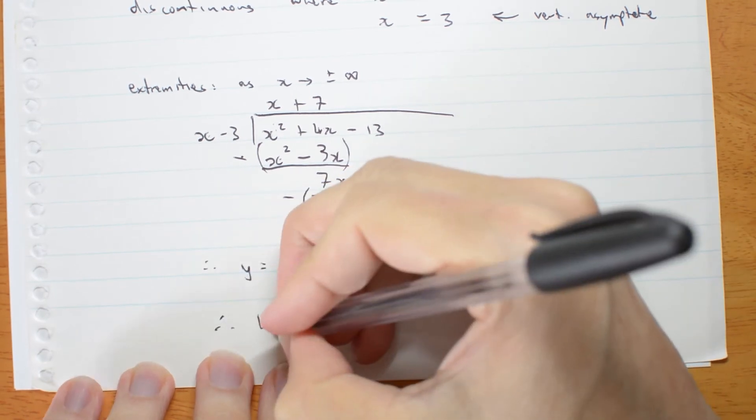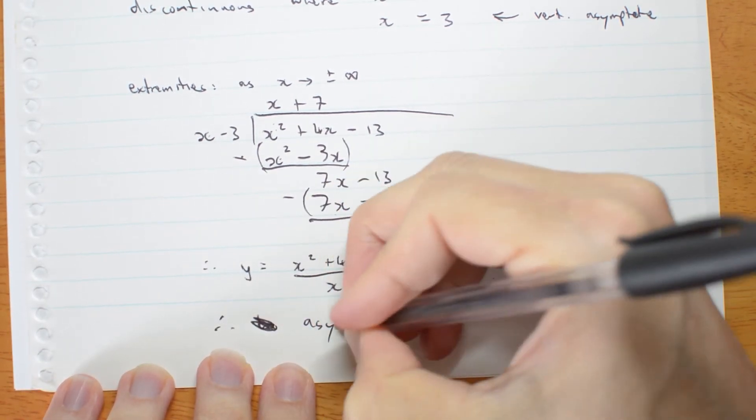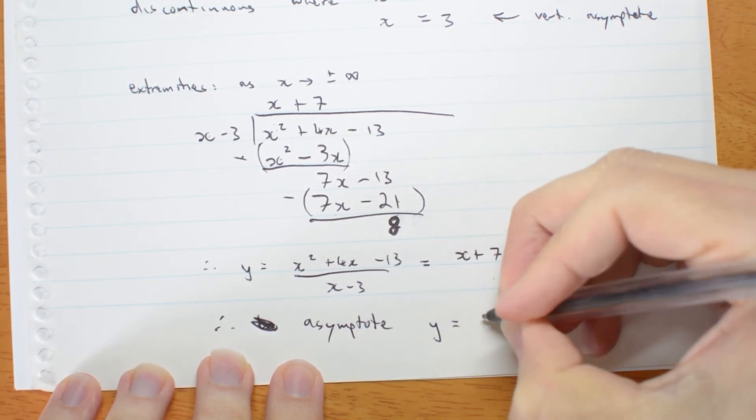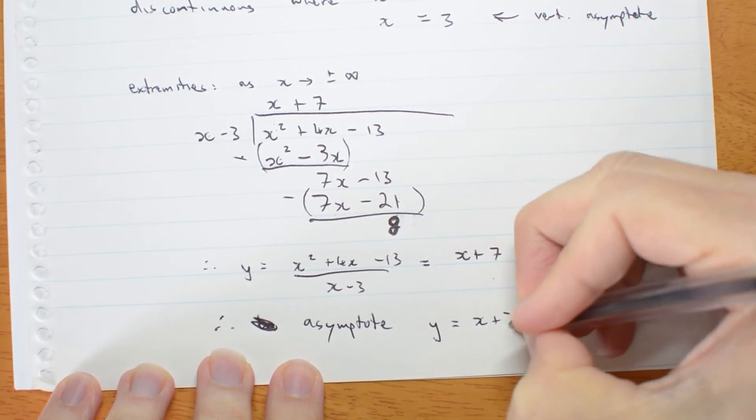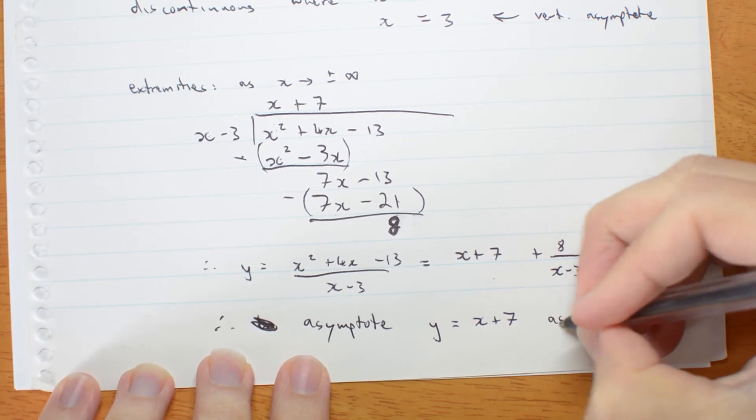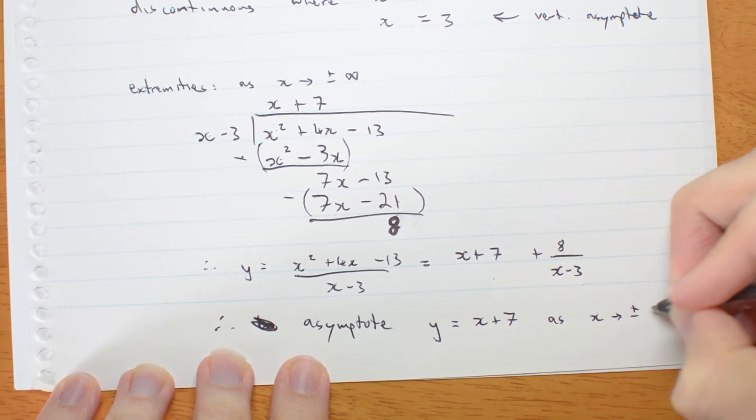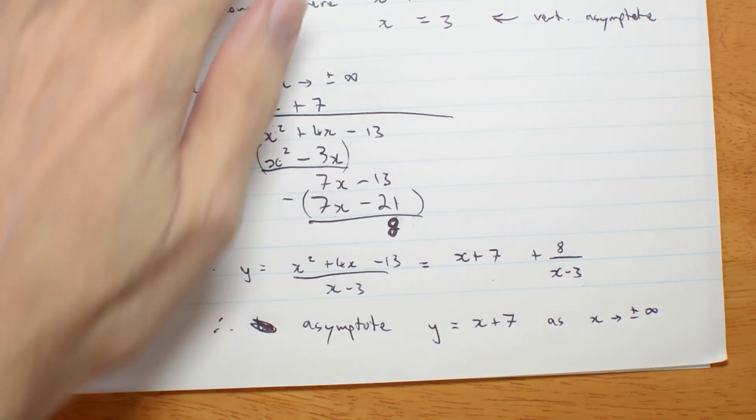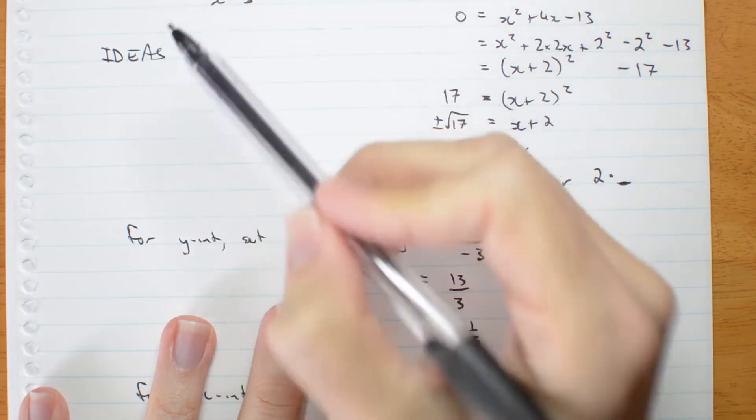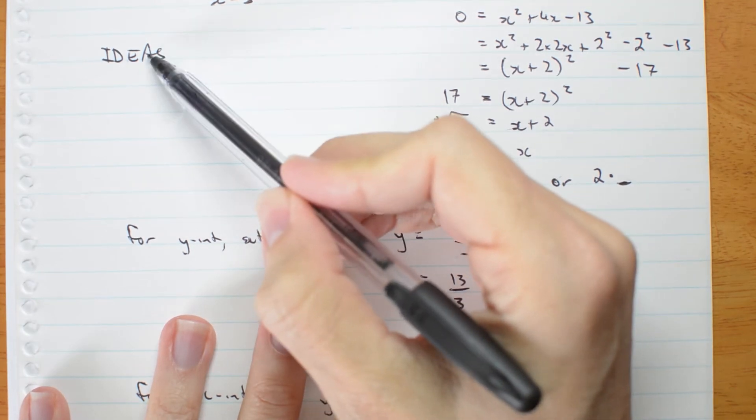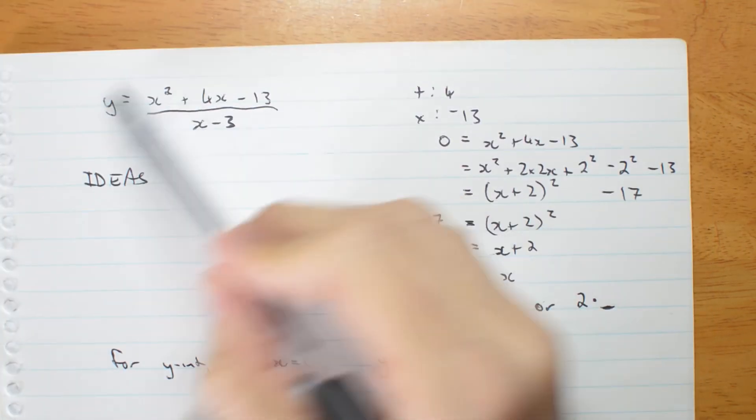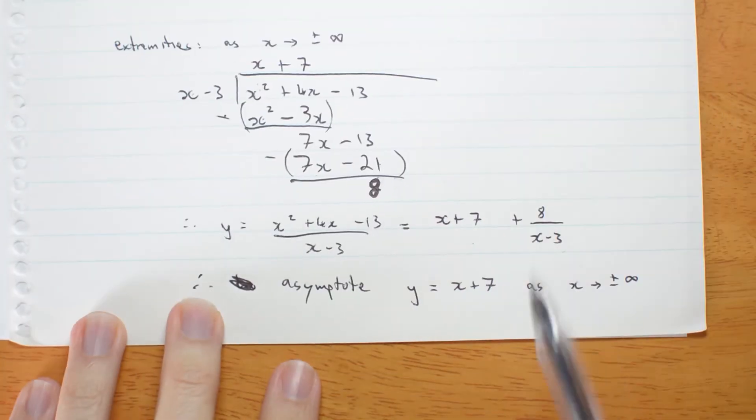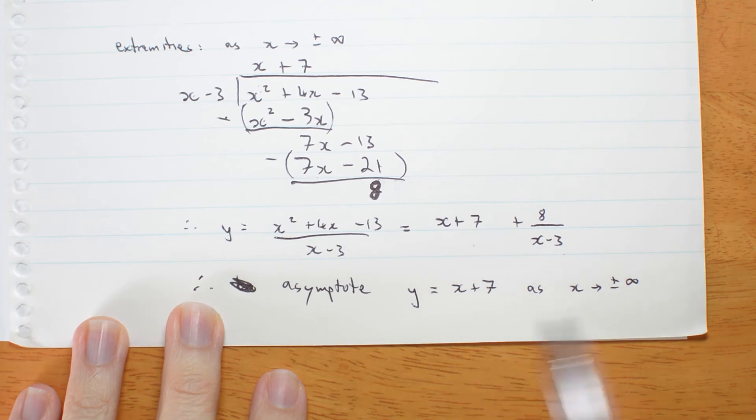Therefore, no, it's not horizontal. It's not horizontal at all. There is an asymptote y equals x plus 7 as x gets very large, positive or negative. OK. That was extremities. What about asymptotes? Well, the only remaining question is does my graph of my function ever cross this linear asymptote?